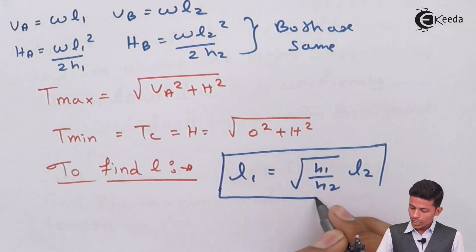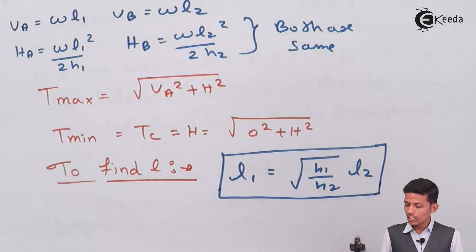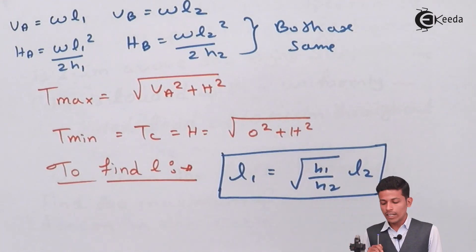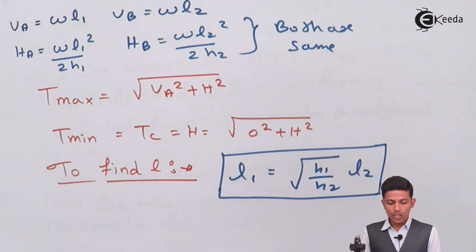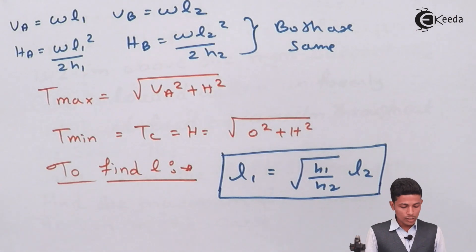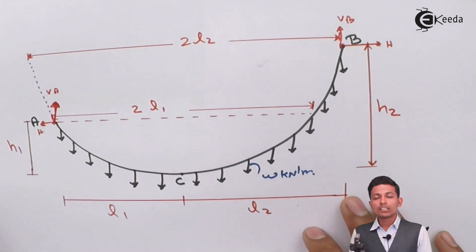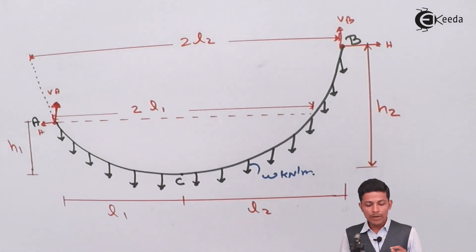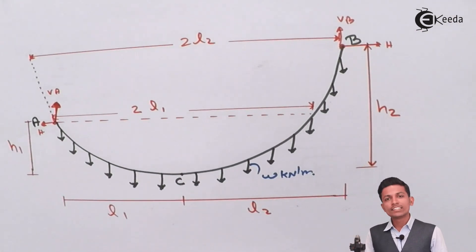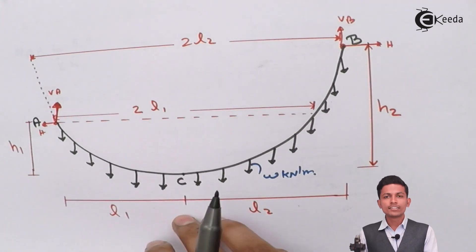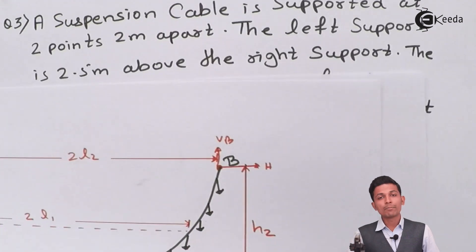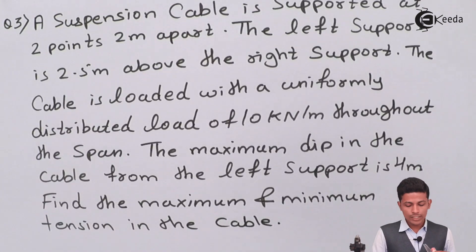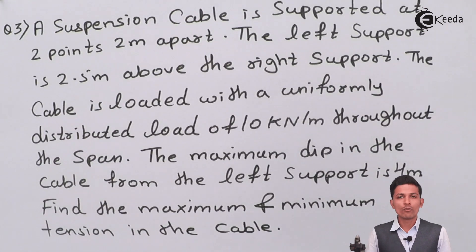When in the exam L1 and L2 are not given, you can find them using this formula — don't divide L by 2 directly, as that is only applicable for the same level case. Now let's start with a problem — Question number 3 for this chapter.